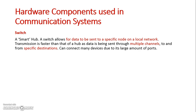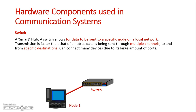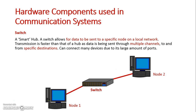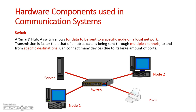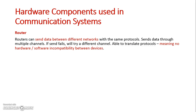This is a great enhancement over the hub because a switch can send one piece of specific data from one node to another. If we look at our switch, we can connect our basic nodes to it, but also other devices such as servers and a printer — all receiving specific data. Node 1 can send specific data to node 2 without it going to the other devices.